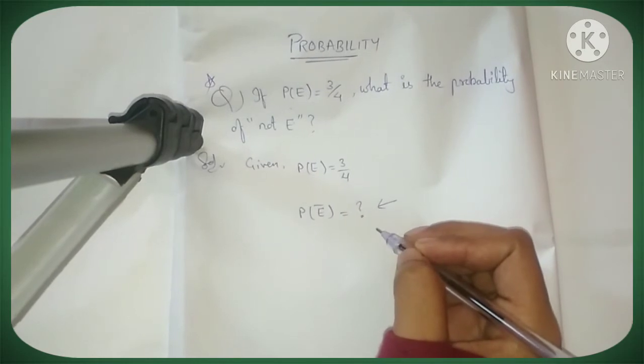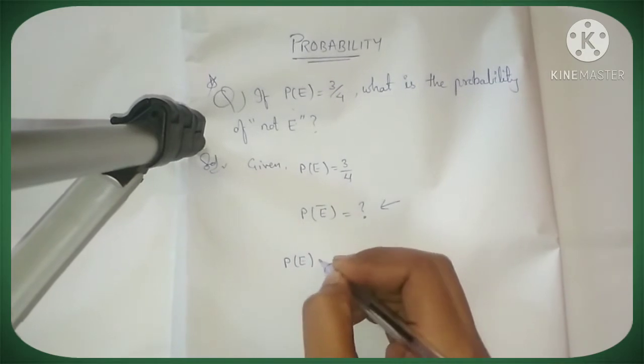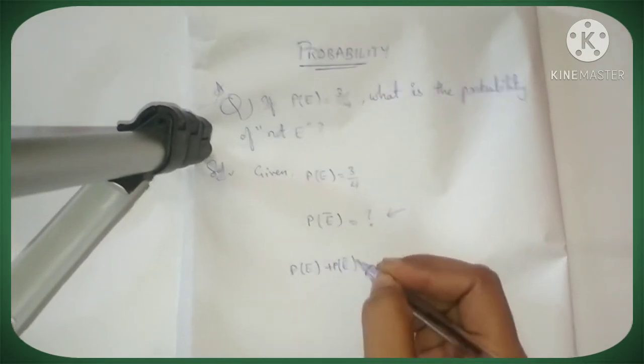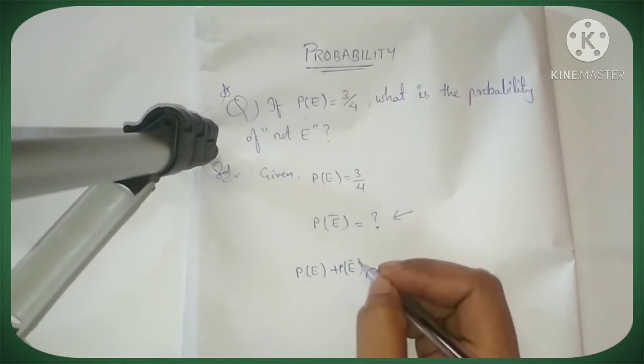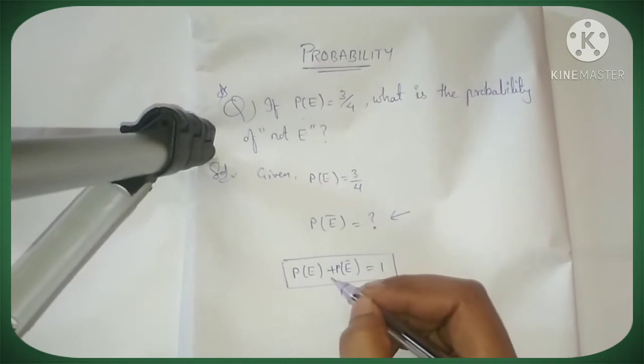Now how can we find this? We have one formula: probability of event plus probability of not E equals 1. P(E) + P(not E) = 1. This is the formula. By using this formula we will find this.